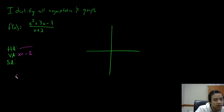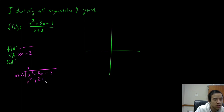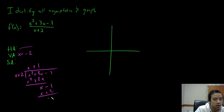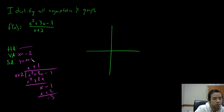To find the slant asymptote, we divide x plus 2 into x squared plus 3x minus 1. x goes into x squared giving x; multiply to get x squared plus 2x; subtract down to get x minus 1; bring down plus 1 to get x plus 2; and we are left with a remainder of negative 3. So our slant asymptote is y equals x plus 1.